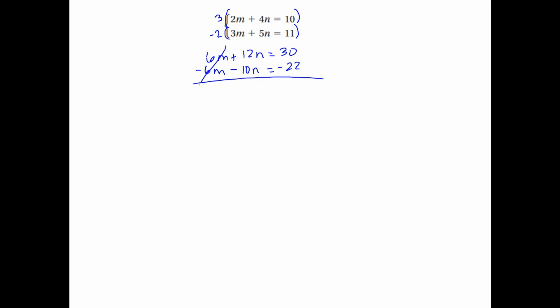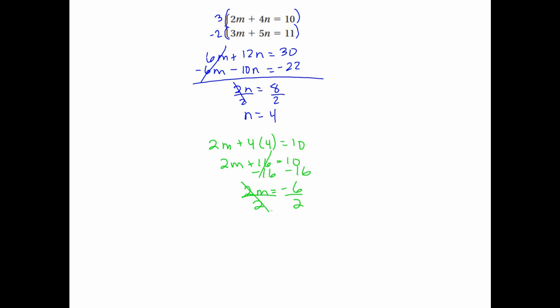Combine them — the m terms cancel out. 12 minus 10 gives 2n, and 30 minus 22 is 8. Divide by 2, so n equals 4. Plug it back into the first equation: 2m plus 4 times 4 equals 10. So 2m plus 16 equals 10. Subtract 16 on both sides: 2m equals negative 6. Divide by 2 and I'm left with m equals negative 3. Remember to write it as a coordinate — m comes first, so negative 3 comma 4.